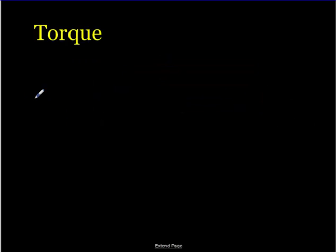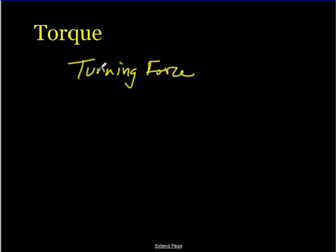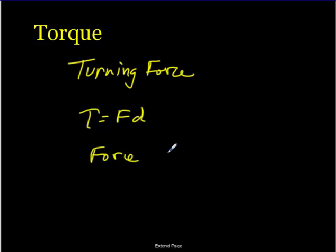That leads us to torque. Torque is our turning force. If I have any force that causes a rotation, that is a turning force. If I open a door, unscrew a lid, or turn a screwdriver — it doesn't matter what it is — if I'm creating rotation, that is torque. We use the symbol tau for torque, and our formula is force times distance. The force is always perpendicular, and the distance is what we call a lever arm.